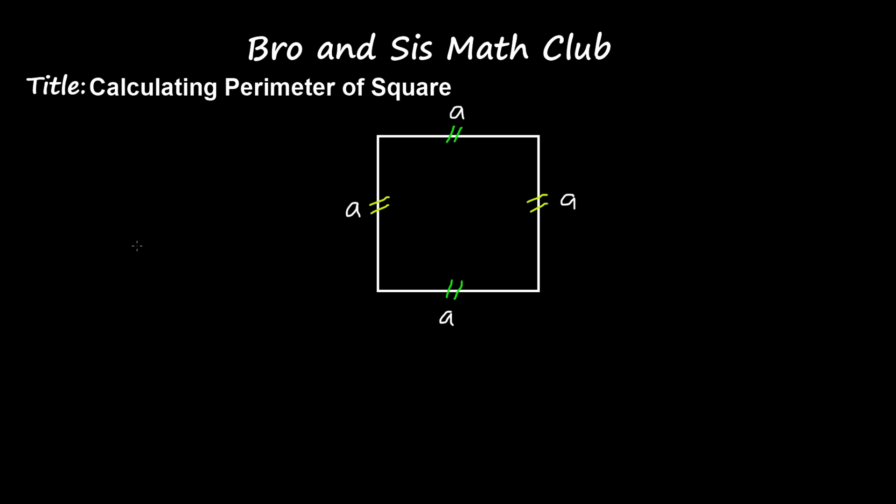Now to find the perimeter of a square, you need to add up all the sides. So A plus A plus A plus A. Another way to do this is to multiply by four, since there are four sides and they all measure the same length.